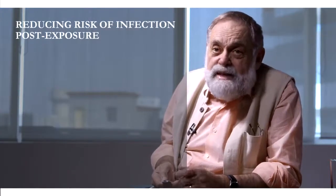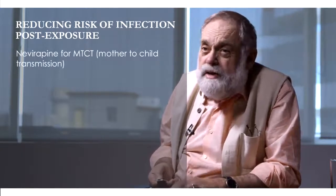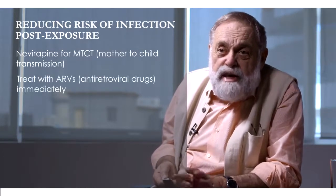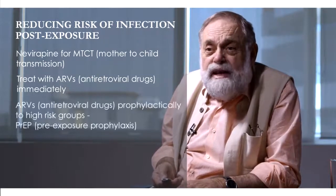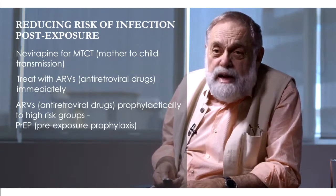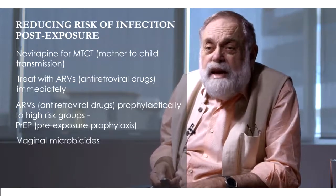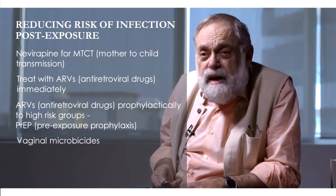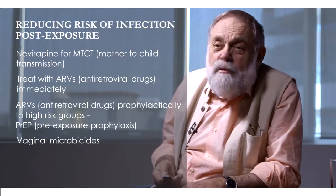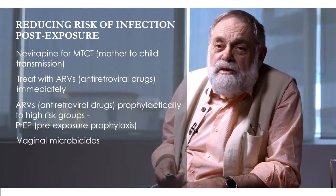There is no way of telling other than to do frequent HIV tests, which is somewhat impractical. We can also reduce the risk of infection post-exposure: someone is exposed, we can give nevirapine for mother-to-child transmission, treat with antiretrovirals post-exposure, or even give them prophylactically, especially to high-risk groups such as people with multiple partners. The use of vaginal microbicides has also been recommended. Clearly, it's far more practical if we can prevent the infection to begin with.